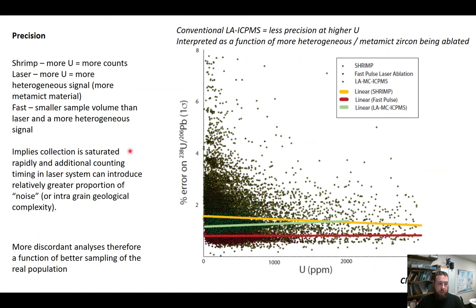We should also talk about precision. In the uranium-lead system, we'd expect that at higher uranium concentrations we've got more counts and therefore more precision — and for SHRIMP work that's what we see. But for laser ablation work that doesn't appear to be the case, and our uncertainties are actually quite good relative to other techniques, despite the large volume difference between SIMS and laser techniques.